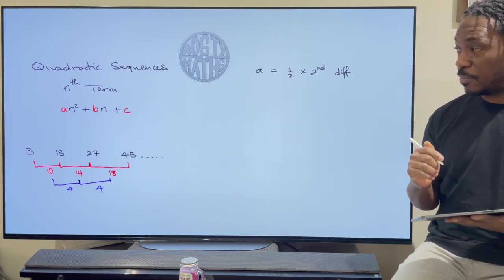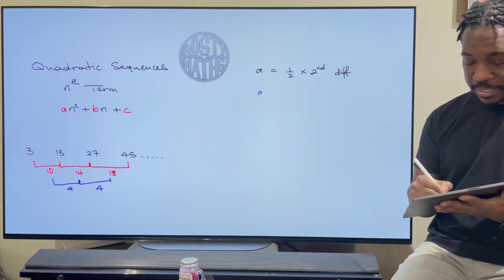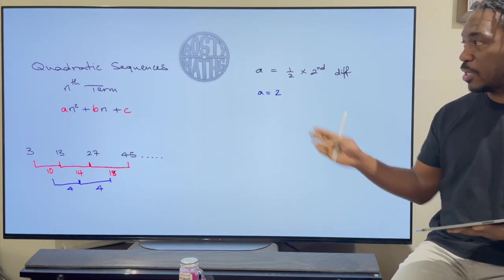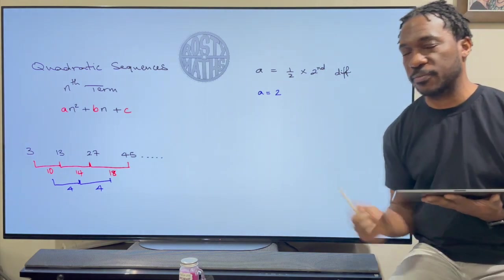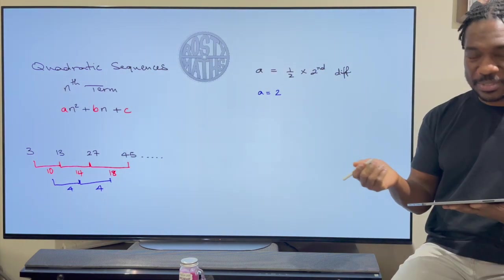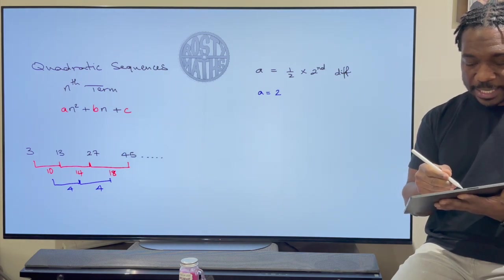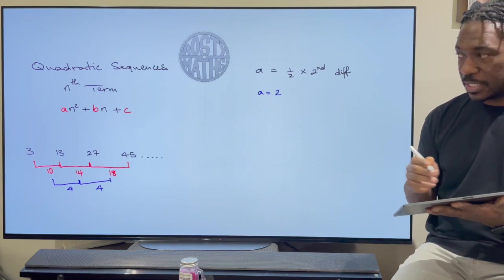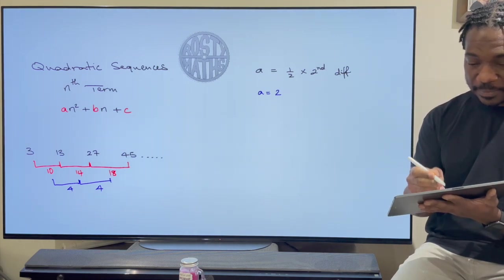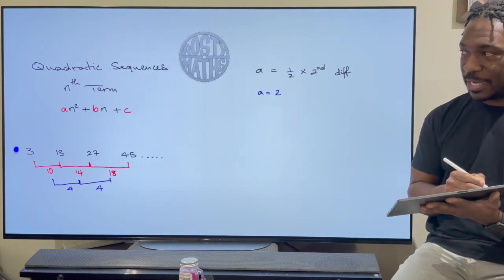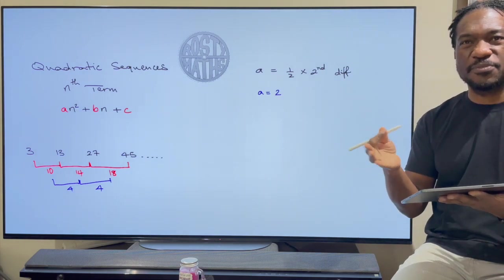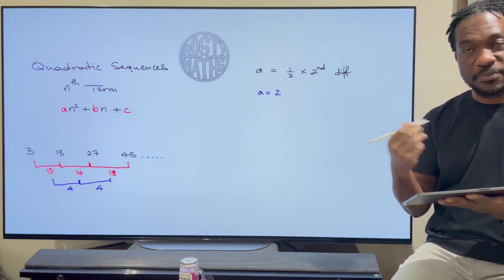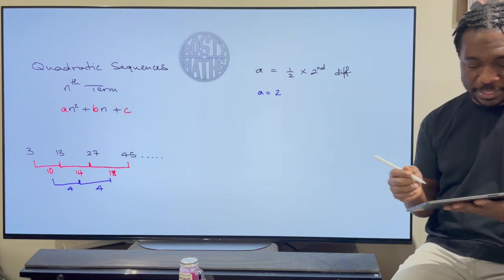Now that I got my second difference I know that a is going to be 2 because it has to be half of the second difference. Now c is really easy to find. If you look at any of my other videos on finding the nth term you always know that I identify c somewhere there. It's always the term before the first term.